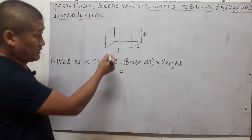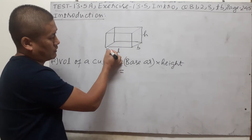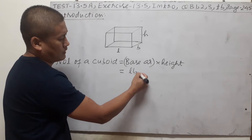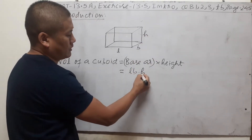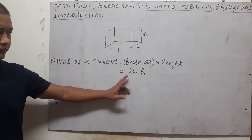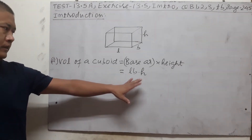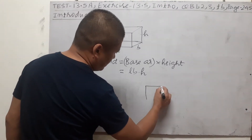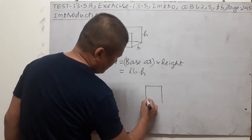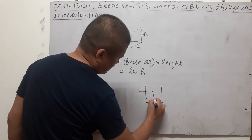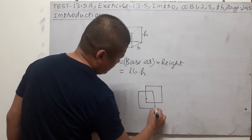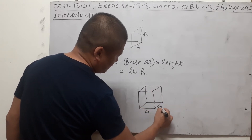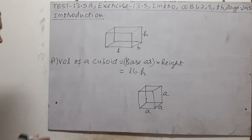The volume of a given cuboid will be given by this formula: base area into height. Base area means the area of the bottom floor of the cuboid, which is a rectangle, so length into breadth is the base area. Volume of a cuboid = L × B × H. Next, the second one is the cube. We know a cube is a cuboid, but the length, breadth, and height are equal.